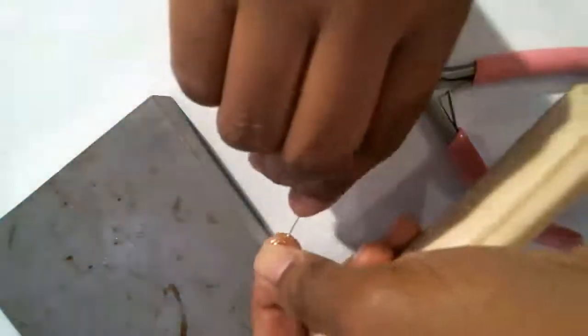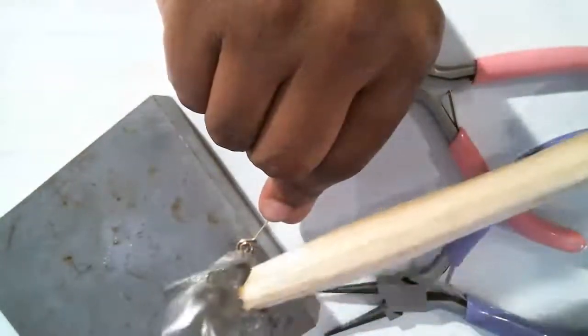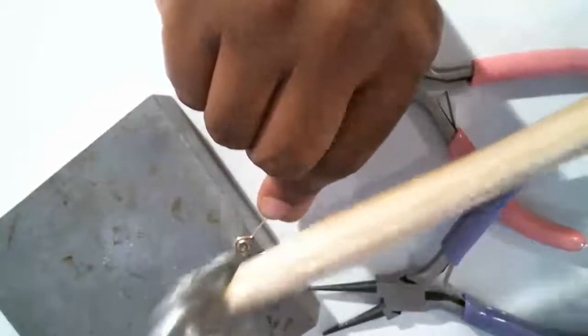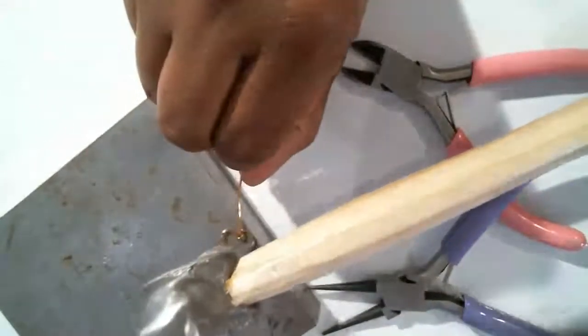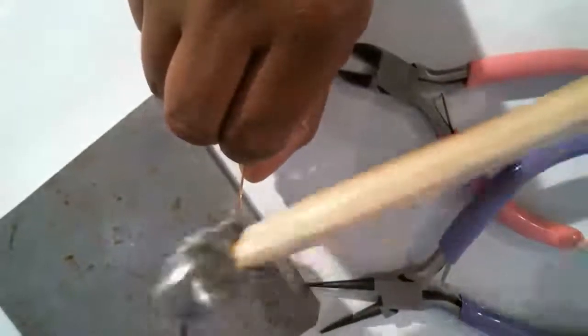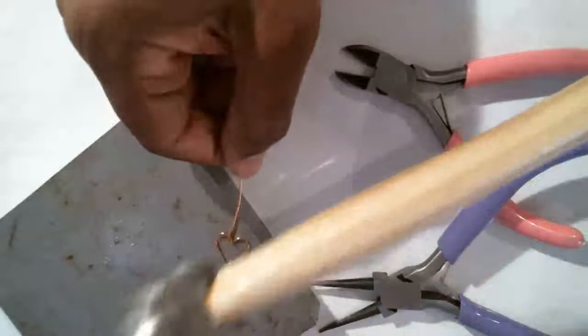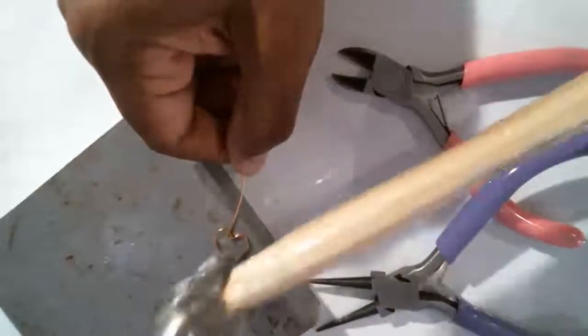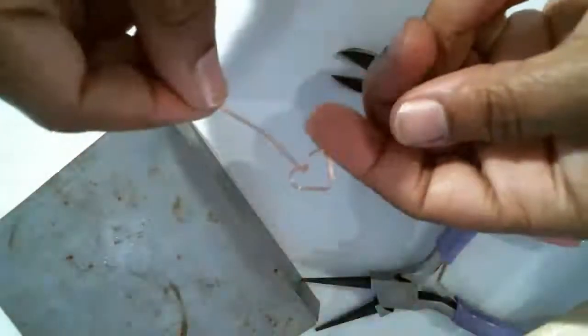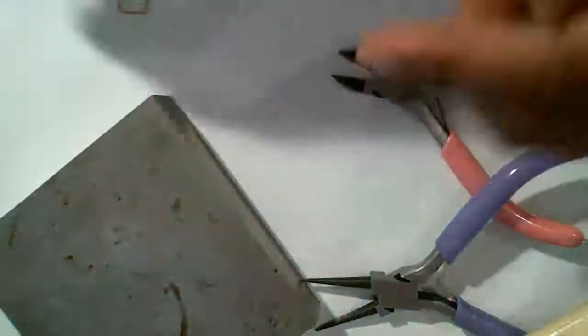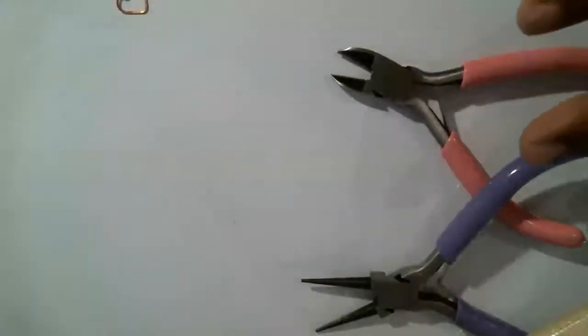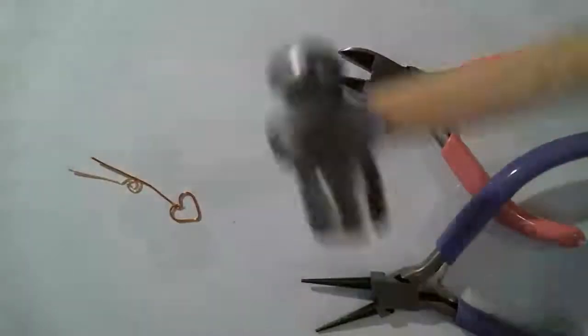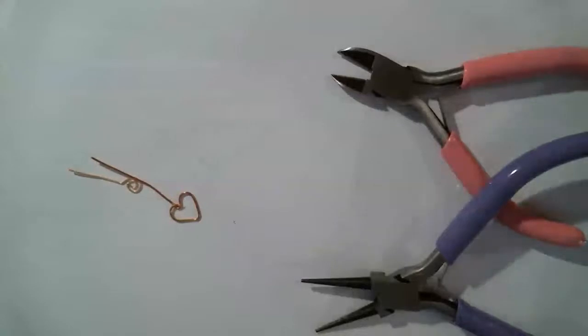So what we did is we just hardened it so that it'll keep its shape. Same thing with the heart. I'm going to do both sides because I want to make sure. That's hardened now so it will keep its shape. So you can sit and make a bunch of head pins for whatever reason just with your scrap wire. That's one of the things that you can do with your scrap wire.